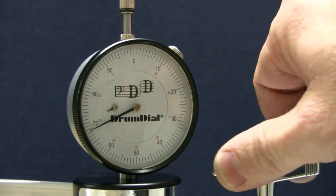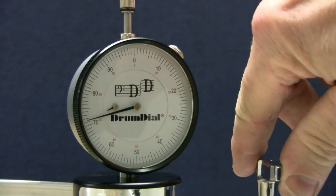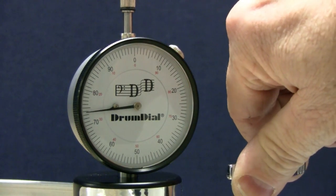Drum dial bearing edge conditioner strengthens and conditions the bearing edge and allows the drum head to glide smoothly for easy tuning.